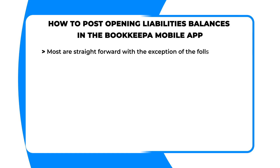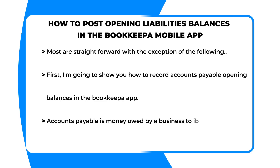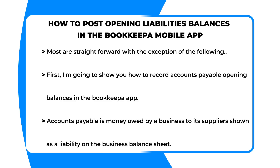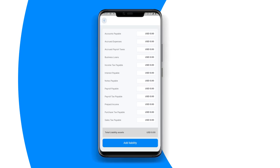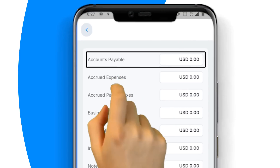Next, enter your opening balances in the spaces provided in the liabilities card. Most are straightforward with the exception of the following. First, I am going to show you how to record accounts payable opening balances in the Bookkeeper app. Accounts payable is money owed by a business to its suppliers, shown as a liability on the business's balance sheet. First, click on the accounts payable amount field.